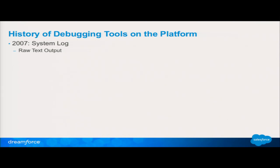When Apex arrived in 2007, the only thing you could do for debugging was the system log. Who remembers the system log? Where the developer console link is now on your name, there was a thing that said 'system log.' It basically just gave you raw text, raw log, raw output, which you could Control+F in your browser or paste into another window. I remember pasting into Excel to get the timings right and do more formulas to split it up. It was pretty basic.